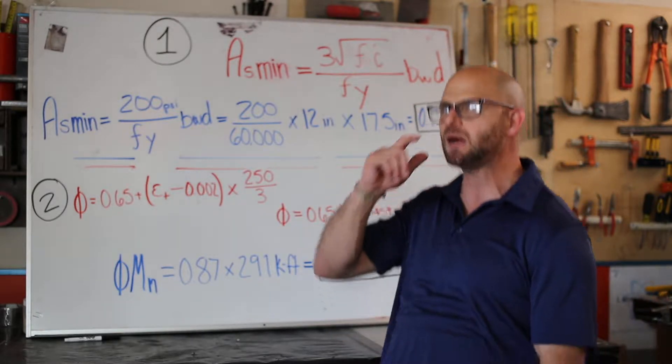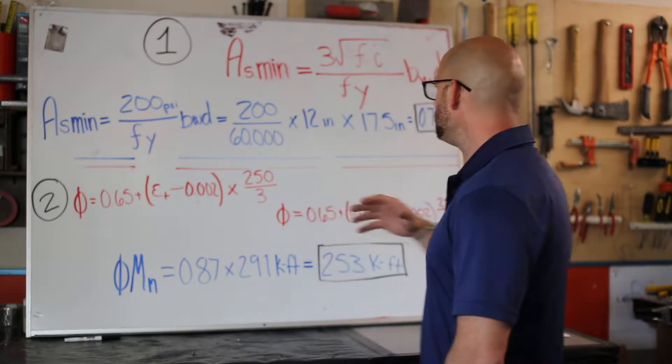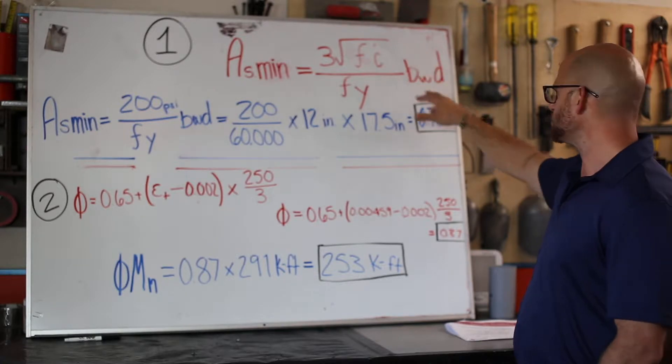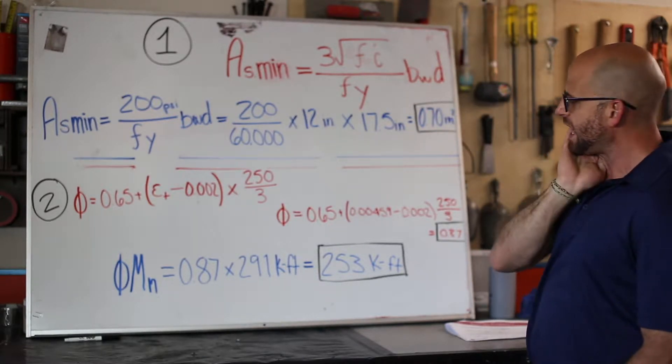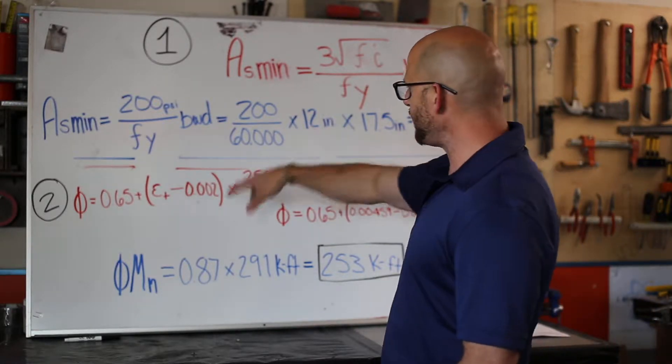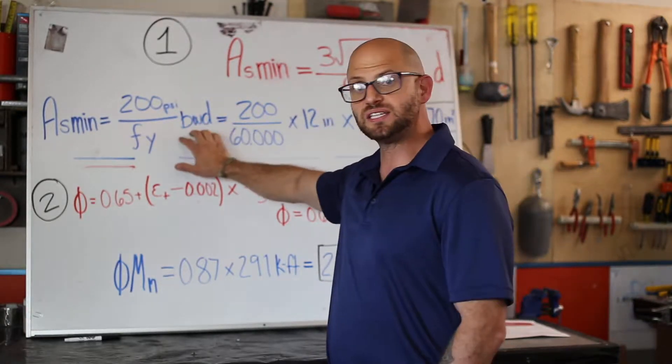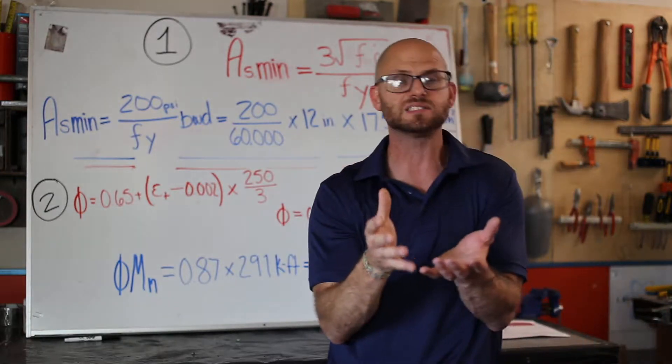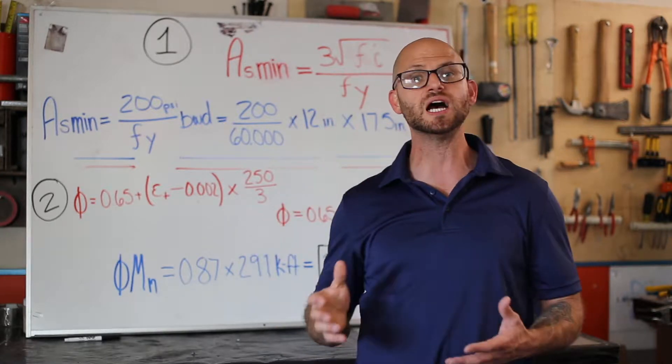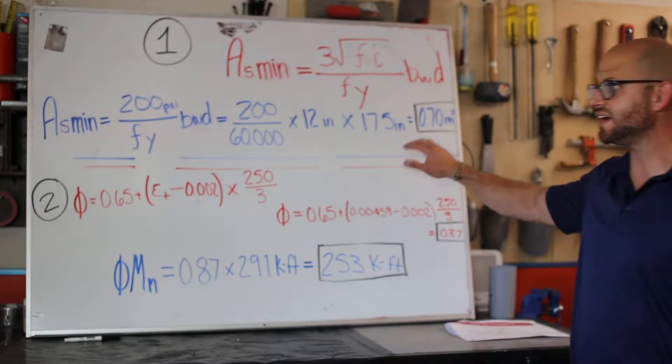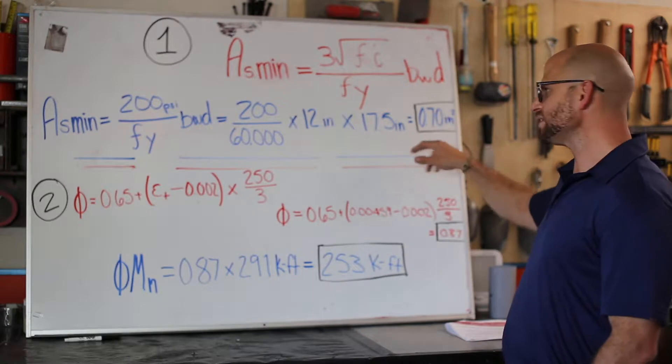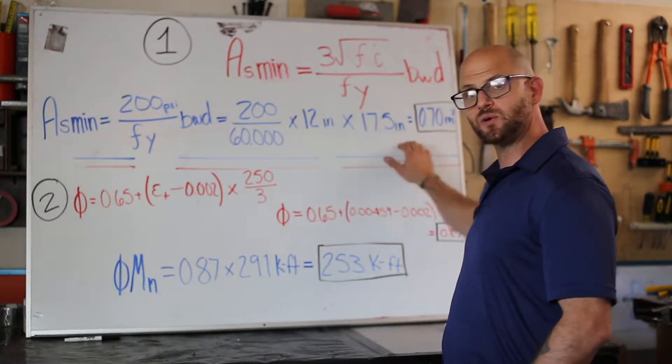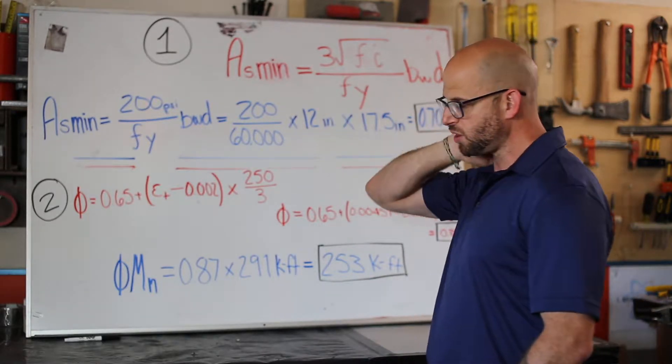The first thing we're going to do is check that there's this minimum amount of steel in our reinforced concrete beam. We've got 3√(f'c)/fy × b × d, and we compare that to 200/fy × b × d. It's got to be above this minimum, and if it's not, we have to either resize the beam or start putting more steel in there. Our equations tell us that our minimum amount of steel that we need is around 0.7 inches squared, and we have around four inches squared for our area of steel. So we're good to go, we got more than enough according to ACI 318.